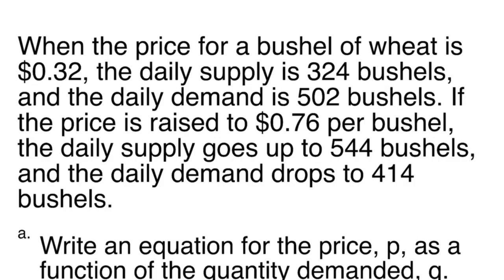When the price for a bushel of wheat is $0.32, the daily supply is 324 bushels and the daily demand is 502 bushels. If the price is raised to $0.76 per bushel, the daily supply goes up to 544 bushels and the daily demand drops to 414 bushels.